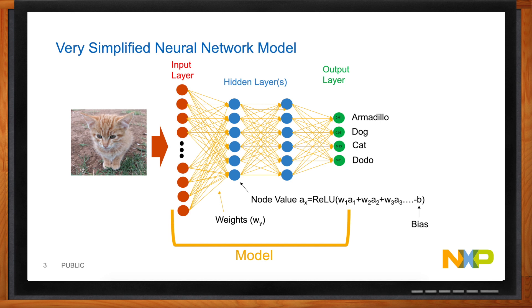For an example: we have a picture, and the input layer has one node per pixel. If you have a 32 by 32 picture with three colors, then you'd have 3,072 input nodes. Those nodes have a value based on the pixel value, mathematical operations are made to get to the second layer, and then more weights and biases carry you to the next. At the output layer you have different categories — the category with the highest value is what the neural network thinks the image is. In this case, the highest value is 'cat,' so the network thinks it's a cat.